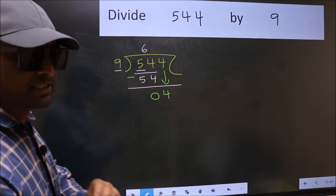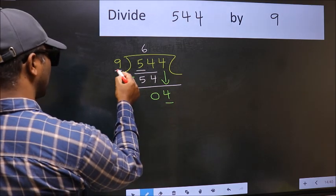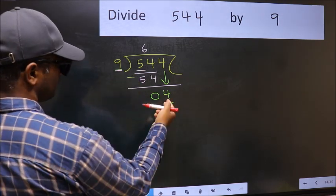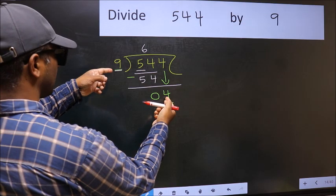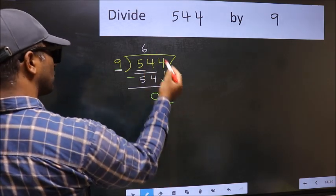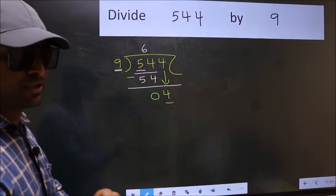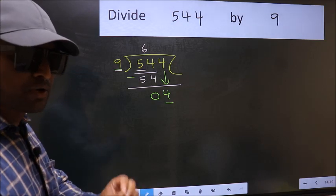And the mistake is this. Here we have 4 and here 9. 4 is smaller than 9. So what many do is they directly put dot and take 0, which is wrong.